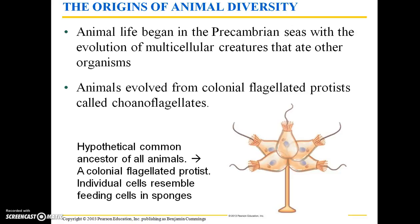Let's start with animal origins. Animal life began in the pre-Cambrian seas with the evolution of multicellular creatures that ate other organisms. These were different than existing multicellular creatures that were autotrophic, meaning they could produce their own energy using sunlight or chemicals at deep sea vents. Animals evolved from colonial flagellated protists called choanoflagellates. Remember that protists are eukaryotic organisms that are heterotrophic and they are not plants, animals, or fungi — it's kind of a catch-all category.